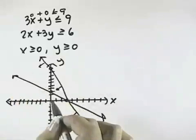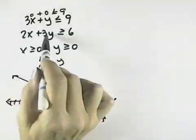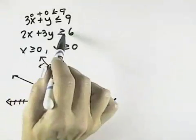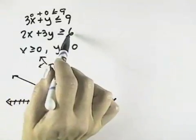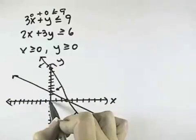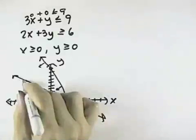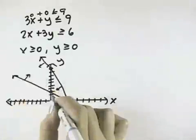And then again for a test point, I could test (0, 0). I'd have 0 plus 0 is greater than or equal to 6 — that's not true. So that says don't shade the way that this 0 is, meaning shade in the other direction.